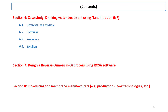In Section 6, a case study using nanofiltration for water production is presented. Section 7, one of the major parts of this course, covers ROSA software and how to design a reverse osmosis system using it. Finally, top membrane manufacturers and their products are introduced to familiarize you with membrane products available in the market.